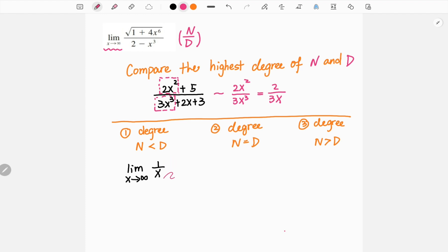In our example we have 2 over 3x. In this case we see we have a constant on top, but then we divide it by x as x goes to infinity, so this denominator is a really large number. So a constant divided by a really large number is always going to give us 0. So in that case, if the degree of our numerator is smaller than the denominator, our limit is always going to equal 0.